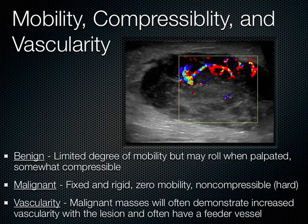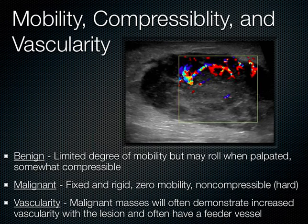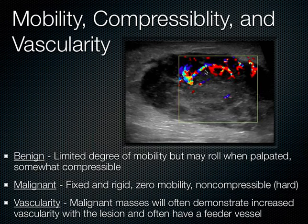Other distinguishing features include mobility, compressibility, and vascularity. Benign lesions have a limited degree of mobility but can actually roll when you palpate them, and they're somewhat compressible. Malignant lesions, however, are fixed, rigid, don't move at all, and are non-compressible and hard. With vascularity, if you put color flow Doppler on a malignant mass, you see increased vascularity within the lesion — sometimes even a feeder vessel penetrating deep into the structure.